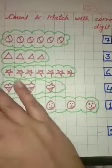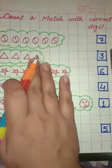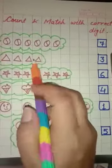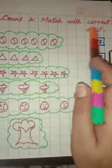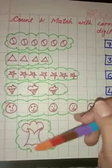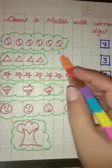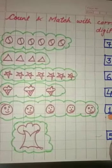Hello everyone, so let's start today's class. My today's class is of math subject and the topic name is count and match with correct digit. You can see that here are some pictures and here are some digits. You have to count the pictures and match with the correct digit.